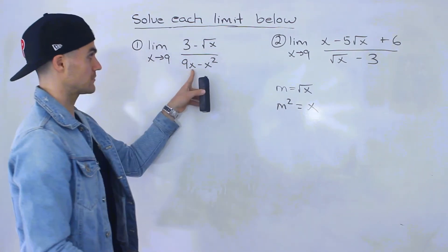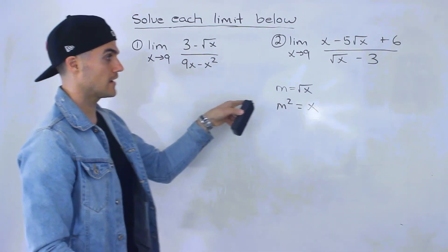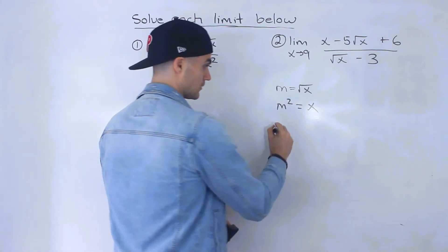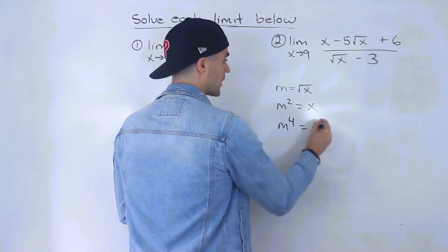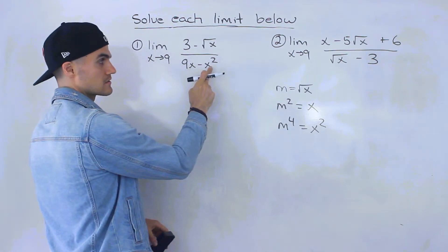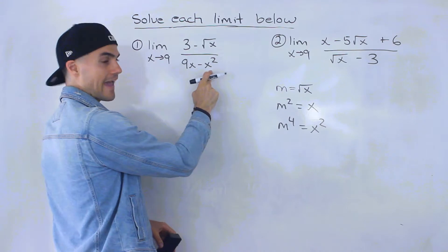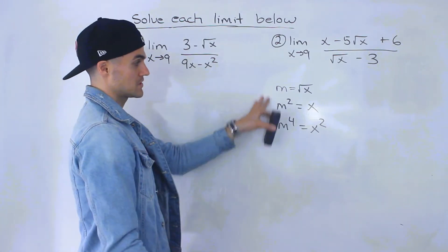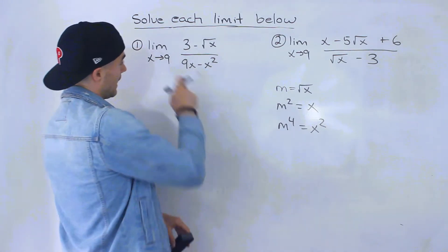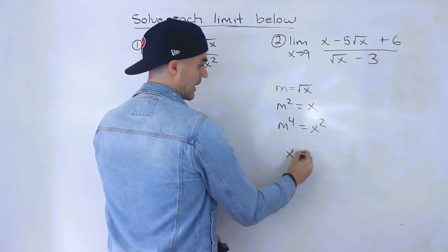Now we have something to plug in for x. If we square both sides again, m to the power of 4 equals x squared. Now we can substitute for x squared. We have something to substitute for each x term, and it's going to be in terms of m.